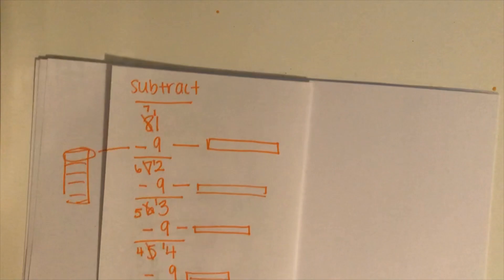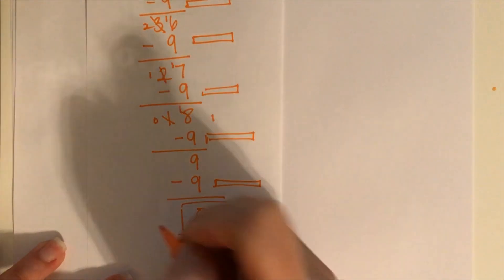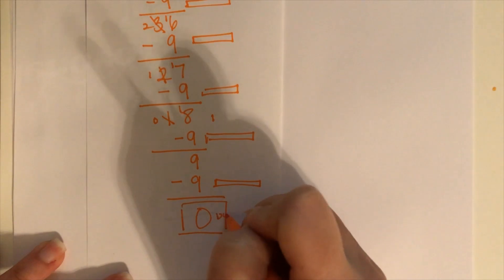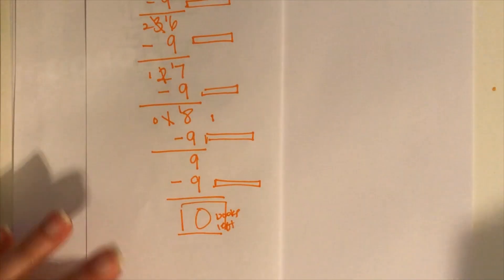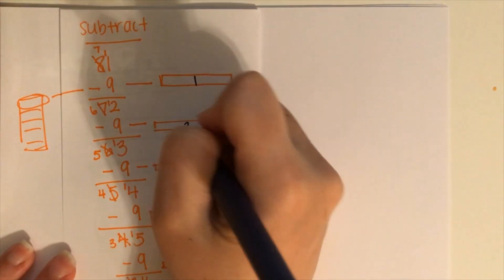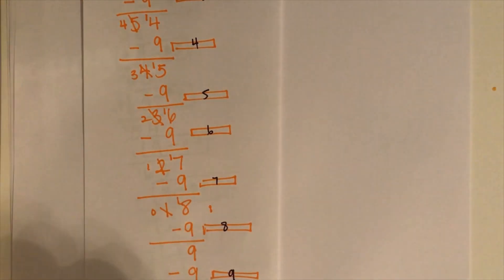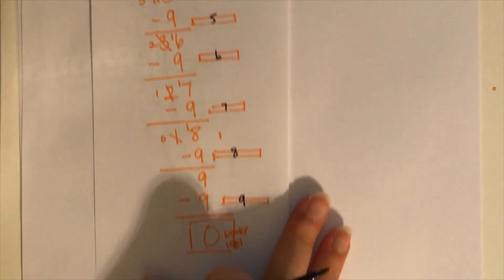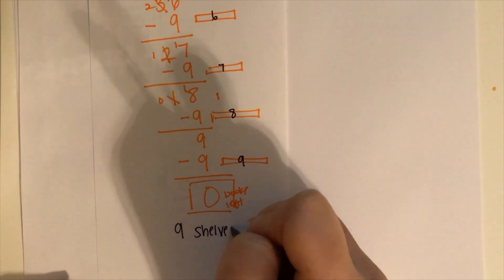So right now, if you look up, I have all these bars for my shelves. And my answer right now on the bottom is zero because that means you have zero books left. And then I'll count the shelves. Going all the way back up. 1, 2, 3, 4, 5, 6, 7, 8, and 9. So again, we came out to nine shelves.